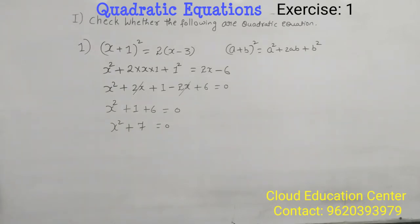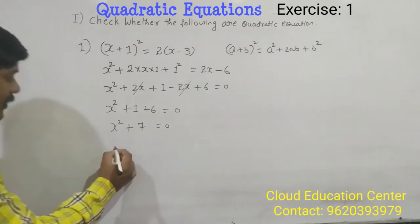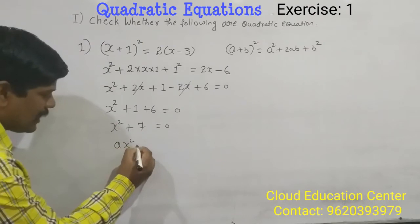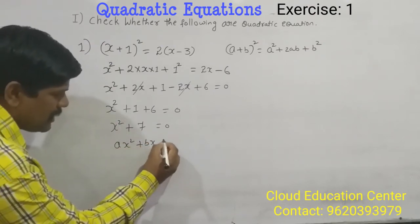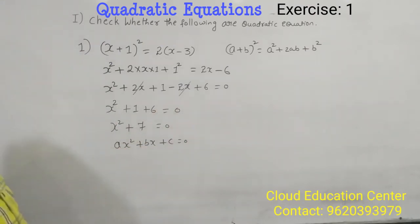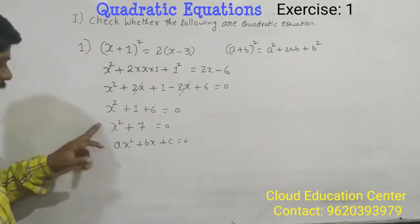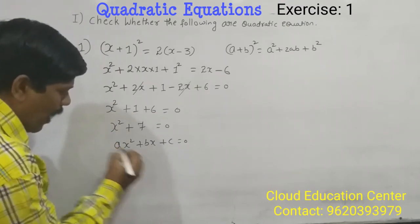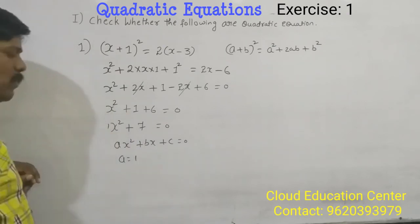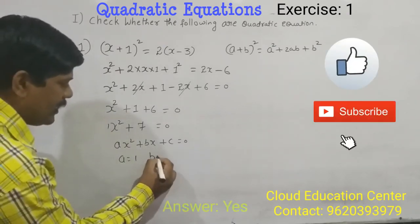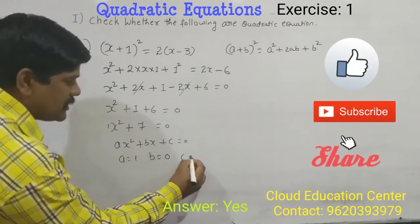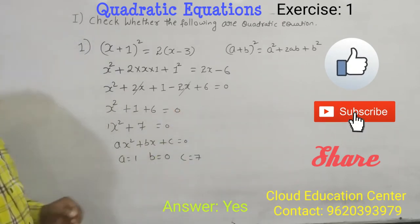Now, it is in the form of ax square plus bx plus c is equal to 0. Okay, here a is nothing but 1, you assume it is 1 and b is equal to 0 and c is equal to 7. Hence, it is the quadratic equation.